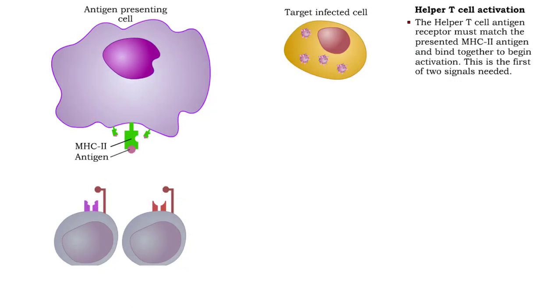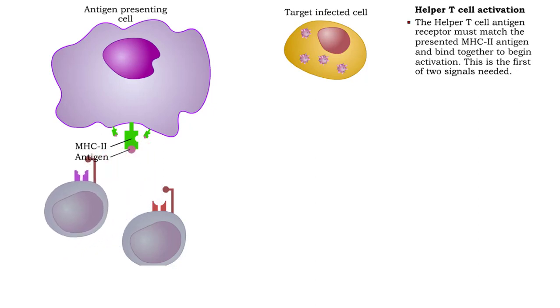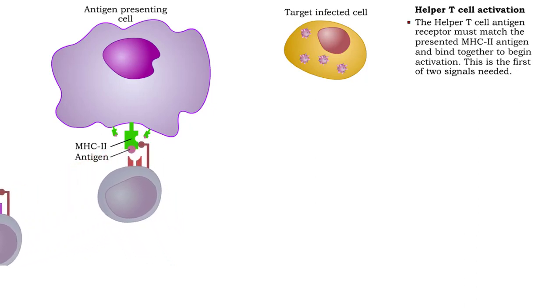The helper T cell antigen receptor must match the presented MHC II antigen. Their binding with one another is the first signal needed to begin activation of the T cell.